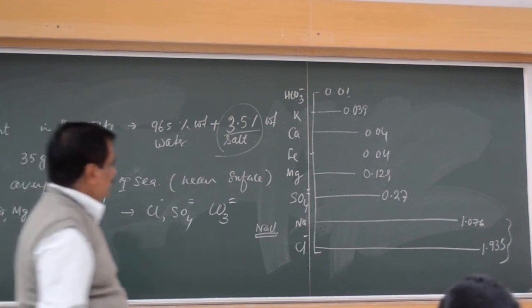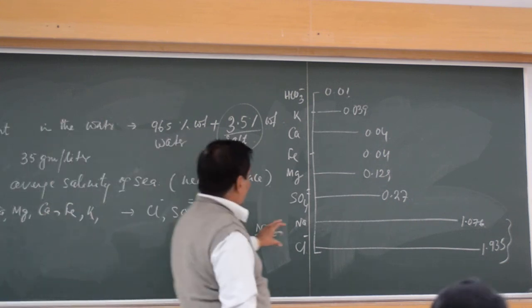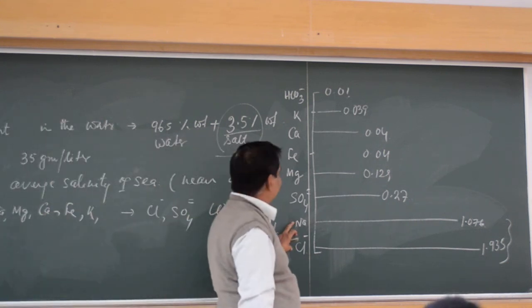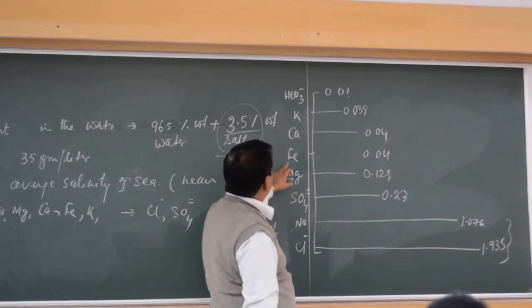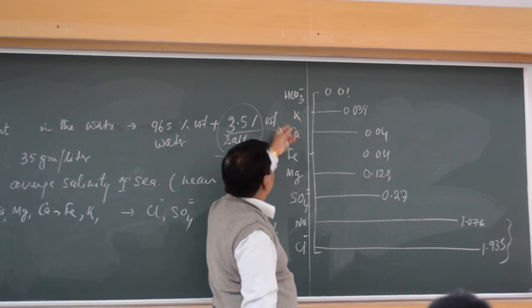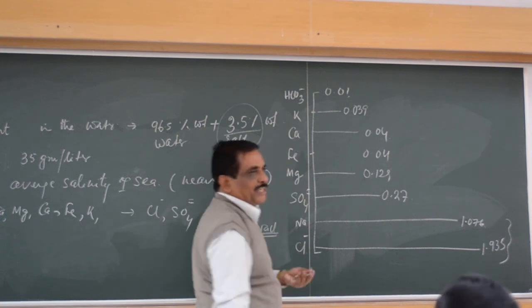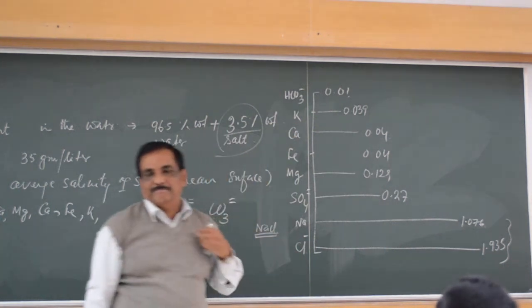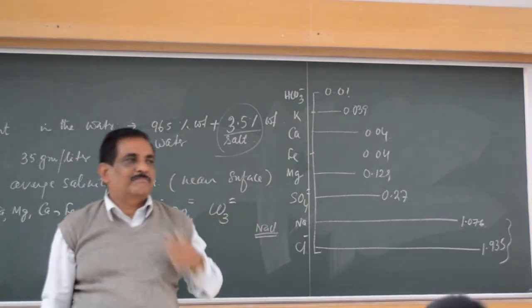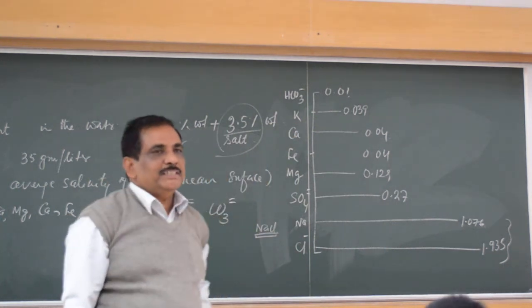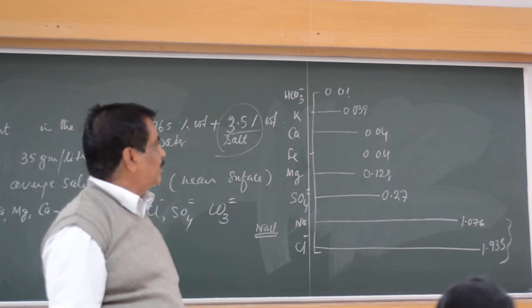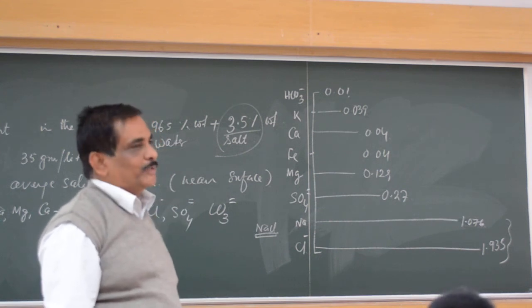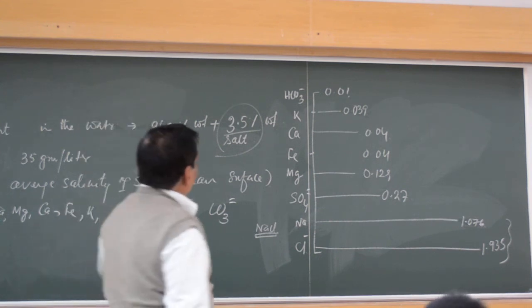Maximum is sodium and chlorine. Magnesium, iron, calcium, and potassium are present in very little amounts. These are the elements present as ions in the seawater.